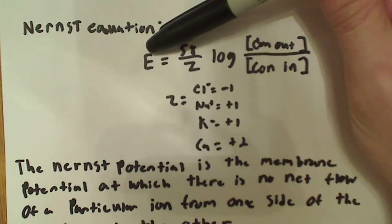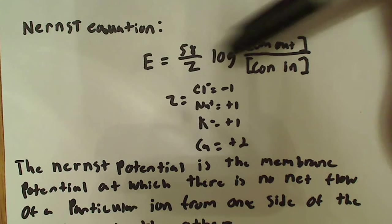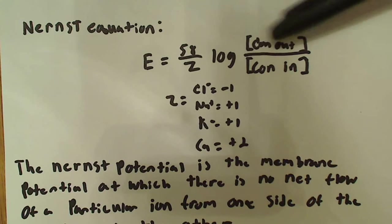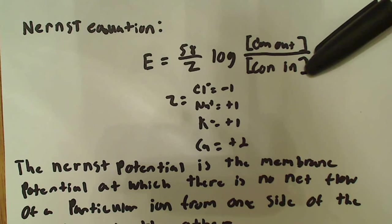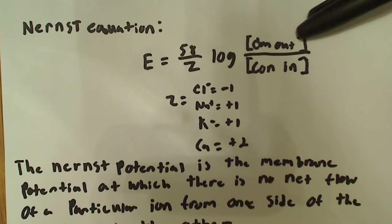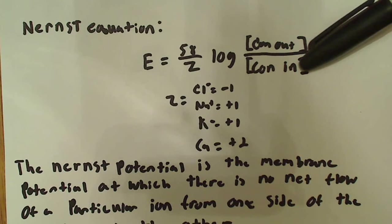The equilibrium potential is equal to 58 over Z times the log of the concentration outside over the concentration inside. So, the concentration of a particular ion outside over the concentration of that ion inside the cell.